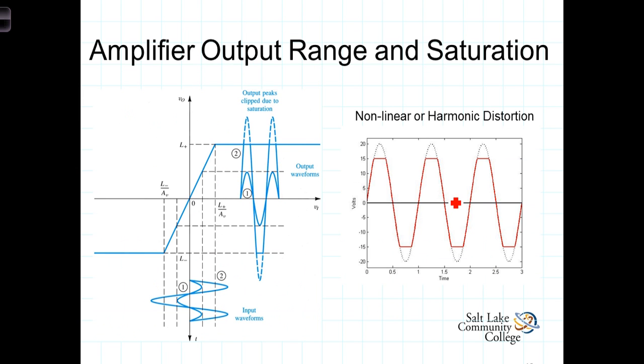So the voltage levels of our power supplies then become the limiting factors of the amplitude at the output. You can't get an output voltage any greater than the positive power supply, nor can the output voltage go any lower than the negative power supply.